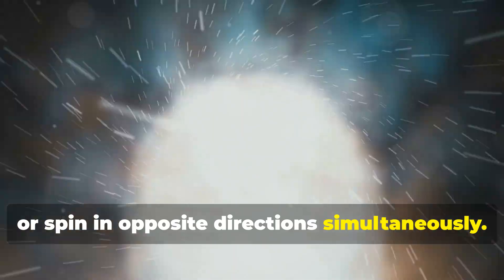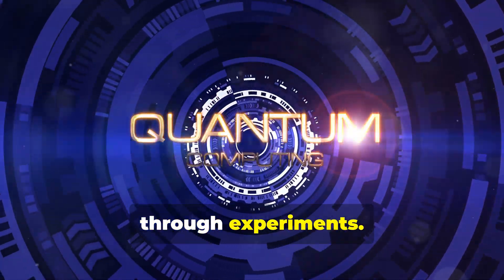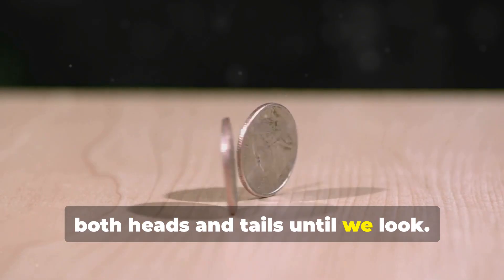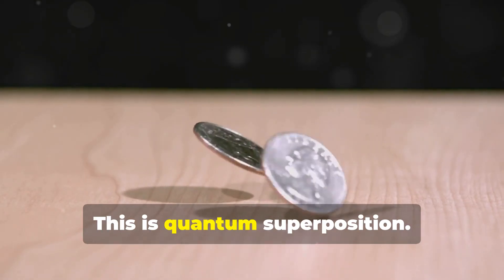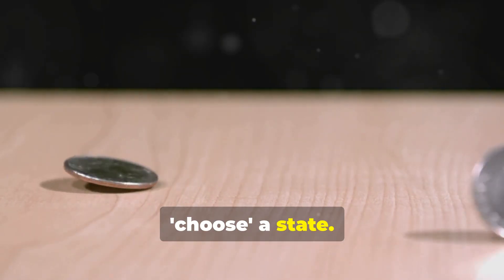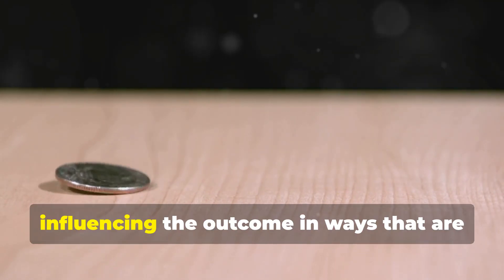Or spin in opposite directions simultaneously. It's a concept that seems impossible, yet it's been proven time and again through experiments. It's like a coin spinning in the air, both heads and tails until we look. This is quantum superposition - only when we observe the coin does it choose a state.